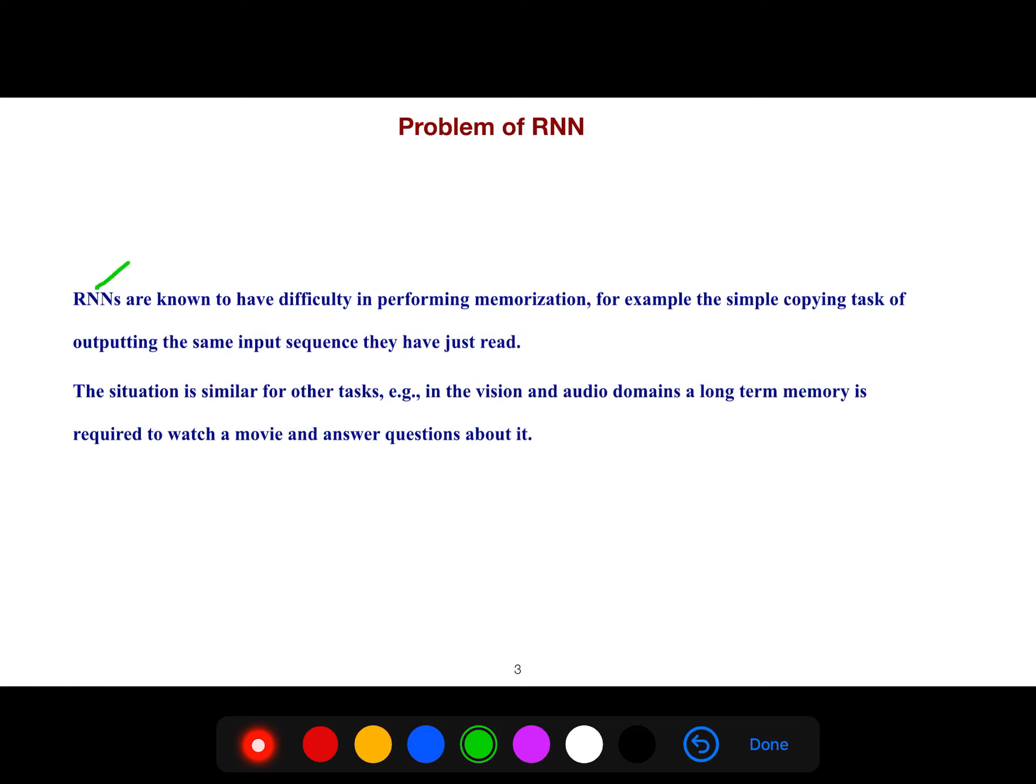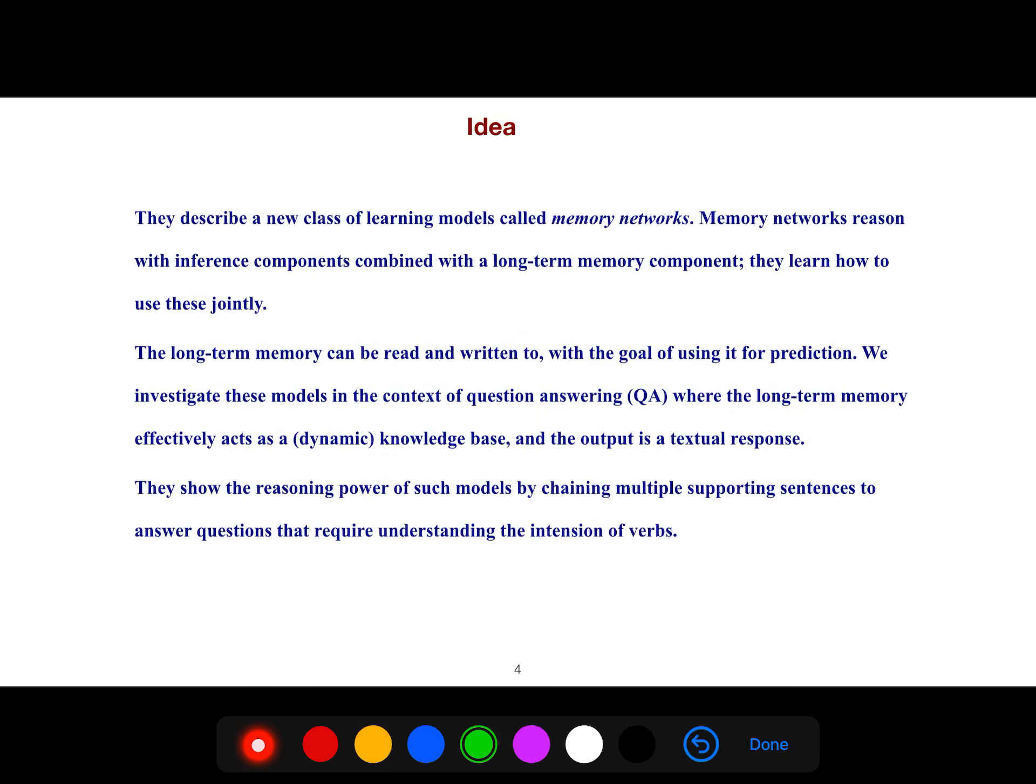Recurrent neural networks are known to have difficulty in performing memorization. They have internal memory, for example LSTM long short-term memory, but it's just internal memory. It cannot memorize very long sentences. The situation is similar for other tasks in the vision and audio domains. A long-term memory is required to watch a movie and answer questions about it, so we cannot just memorize it with simple RNNs.